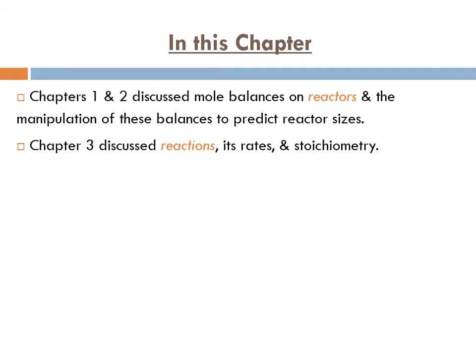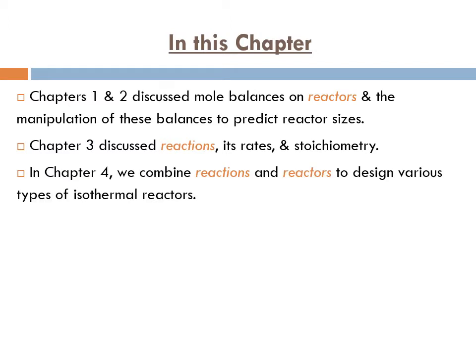Then we move to chapter 3. In chapter 3, we discussed reactions, its rates, rate laws, and we utilize the stoichiometry related to these reactions. So in chapter 4, we're going to combine all of the above. We're going to utilize the rate laws and the stoichiometry for the reactions, and we're going to combine them with the design equations that we have developed for the reactors to design various types of isothermal reactors.